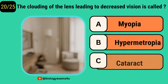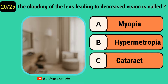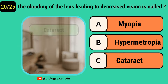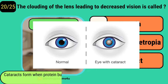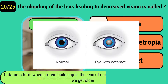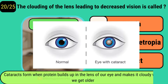The clouding of the lens leading to decreased vision is called? It is called cataract. Cataracts form when protein builds up in the lens of our eye and makes it cloudy, due to aging.